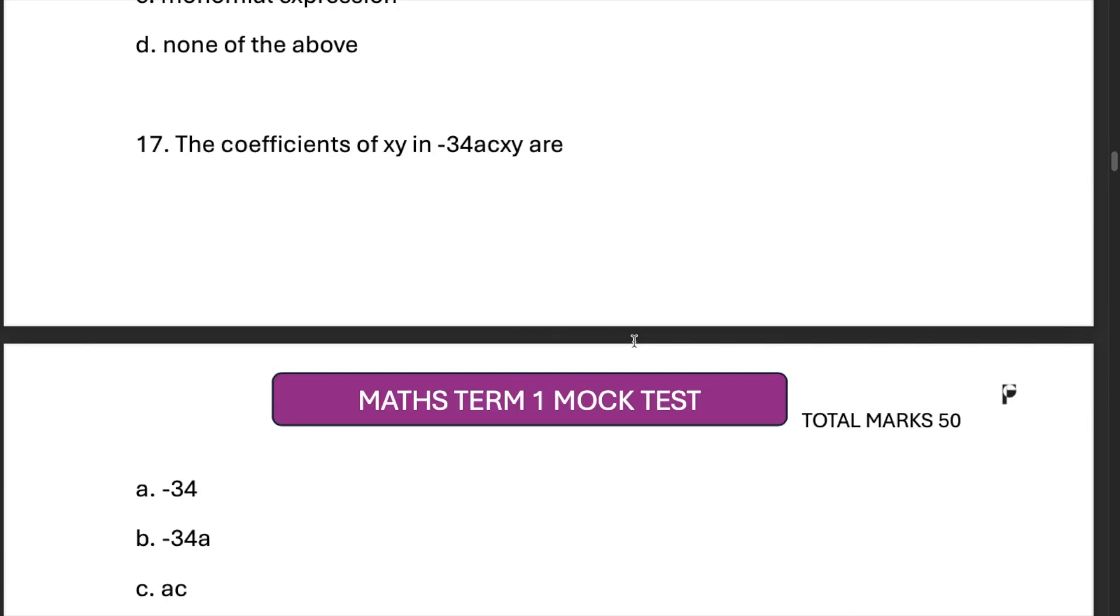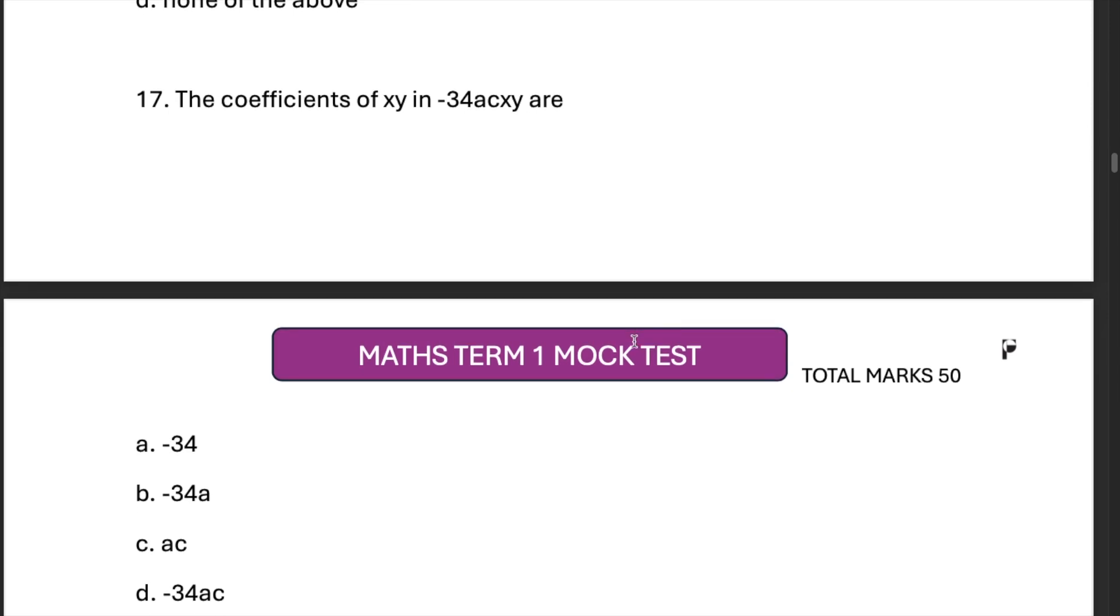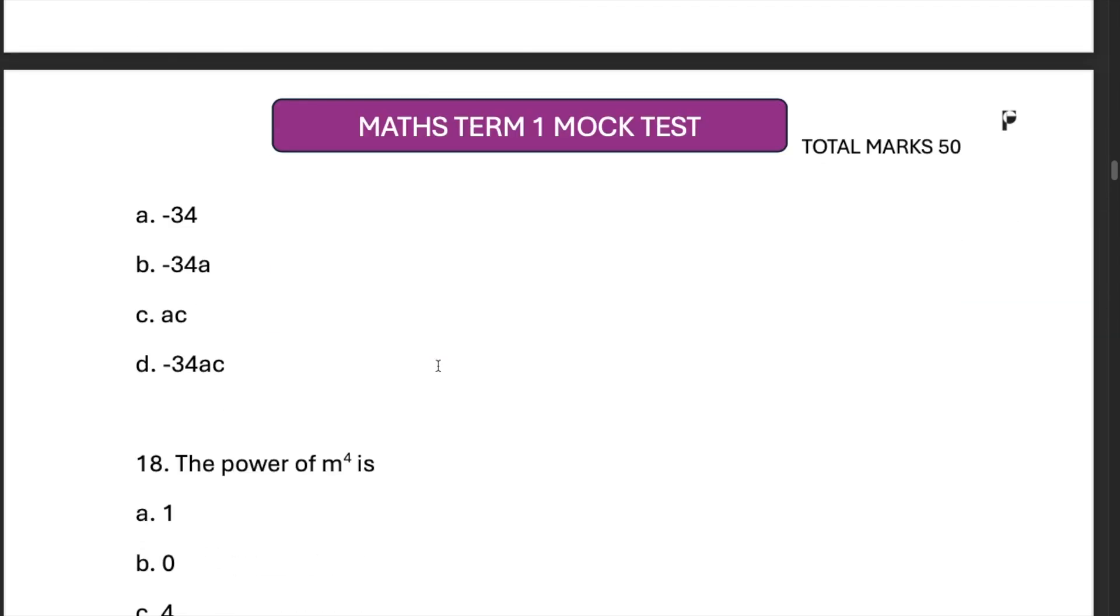The coefficients of xy in minus 34acxy are, now remember the coefficients, you have to just remove the xy and whatever is balance is called the coefficients, so it would be minus 34ac. The answer is D.